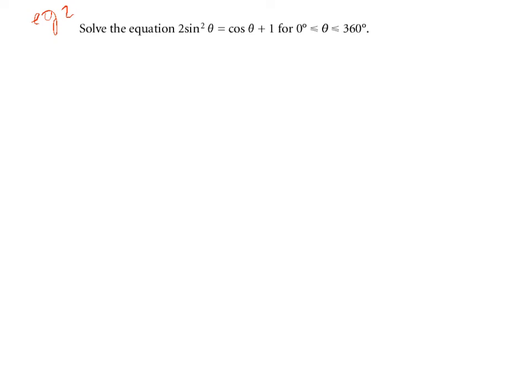Right, the second example that I'd like to do is one in which we have sine squared theta and a cos theta, and what we want to do immediately is to bring everything down to either sine or cos. So we know there's two identities we know. We know that sine theta over cos theta equals tan theta, but we also know sine squared theta plus cos squared theta equals 1.